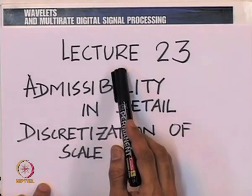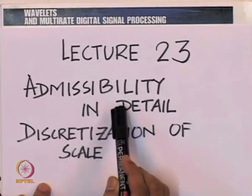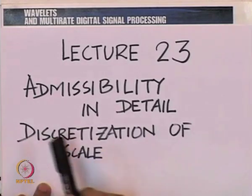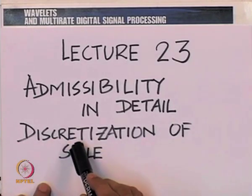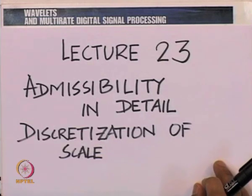In the current lecture, we are going to talk about admissibility in detail first, and later we will proceed to the discretization of the scale parameter in a particular way. Let us go back to the discussion that led us to admissibility — the idea of being able to accept a function ψ(t) as a wavelet.